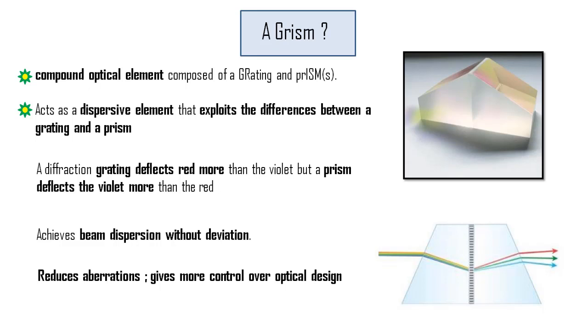We know that a grating deflects the color red more than the violet, but a prism does the exact opposite. It deflects the violet more.